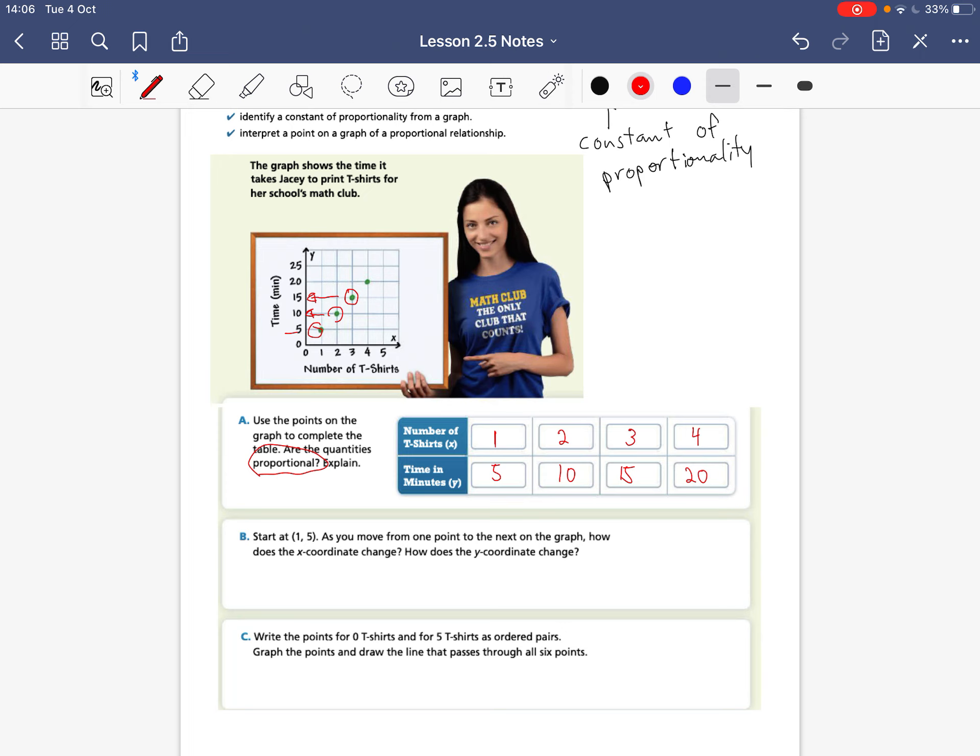So start at 1, 5. As you move from one point to the next on the graph, how does the x-coordinate change? How does the y-coordinate change? So how is this x-coordinate changing? Well, we can see that each time, it's going up by 1. And the y-coordinate, each time, we can see that it is going up by 5.